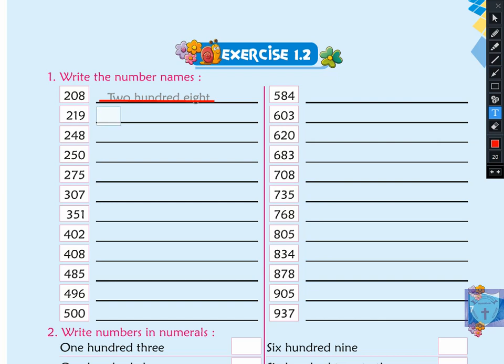There we have two hundred nineteen. So how will we write it? Let's see. First we write the spelling of two — T-W-O — and then hundred, and then we write nineteen.